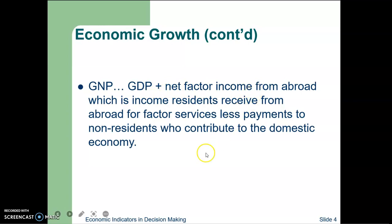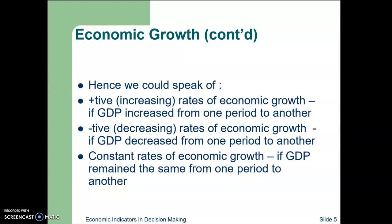GDP is equal to GNP minus net income from abroad, so GNP equals GDP plus net income from abroad. Net income from abroad is the income which residents of a particular country receive from abroad for factor services, less payments to non-residents who contribute to the domestic economy. We can think of positive rates of economic growth if GDP has increased from one period to another, and a constant rate of growth if GDP remains the same.